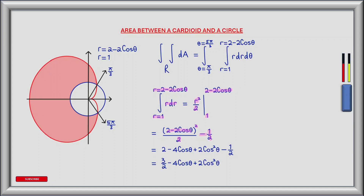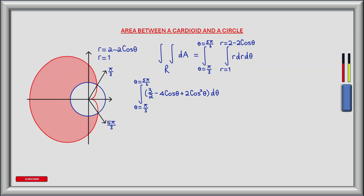Expanding the bracket and dividing by 2 gives 2 minus 4 cos theta plus 2 cos squared theta, minus 1 half. Subtracting the 1 half leaves us with 3 over 2 minus 4 cos theta plus 2 cos squared theta. Moving on to the outer integral, we integrate from theta equals pi by 3 to theta equals 5 pi by 3 the expression 3 over 2 minus 4 cos theta plus 2 cos squared theta, d theta.